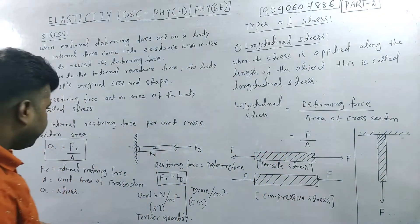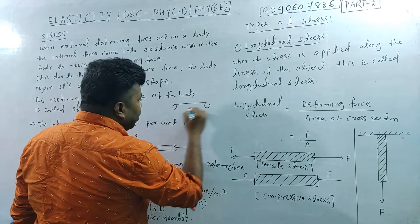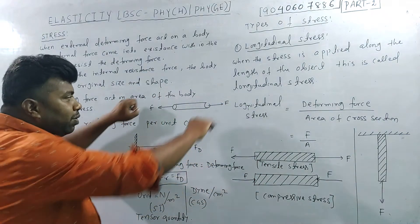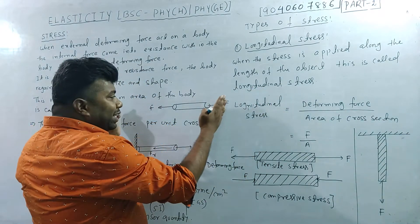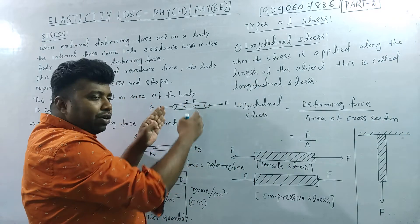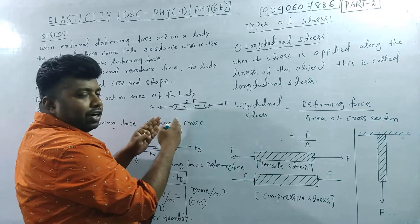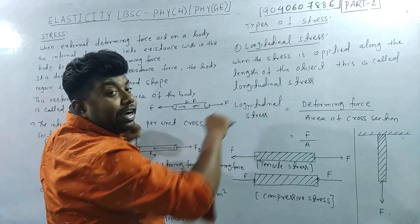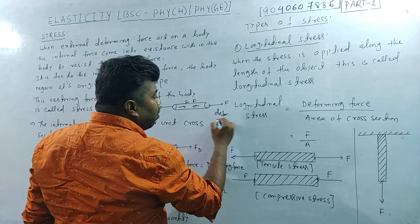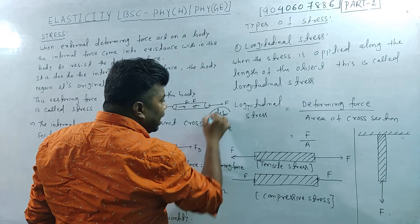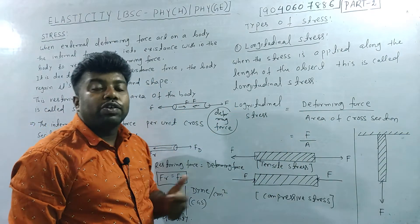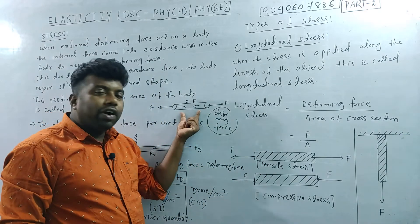Let's see the diagram. If you have a body, then you apply a force. You can apply the force in which direction? You can apply the force in the opposite direction — the external deforming force. The body applies force from the bottom in the opposite direction. That is the deforming force, and the order of the deforming force produces the internal force.